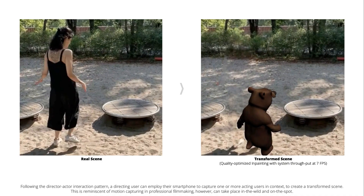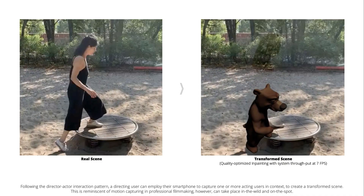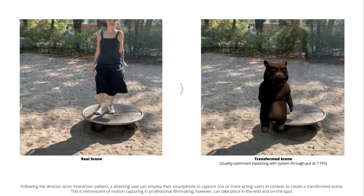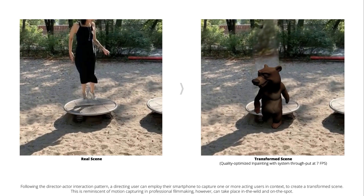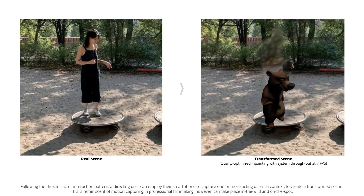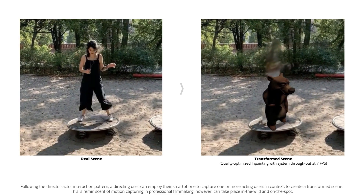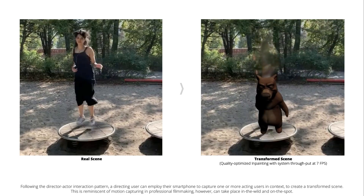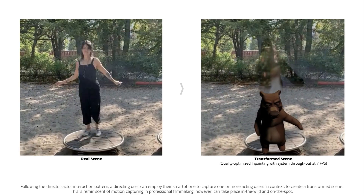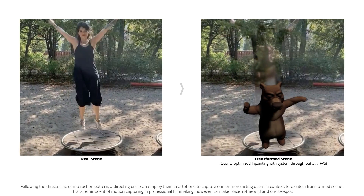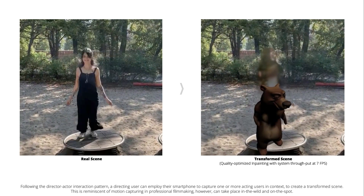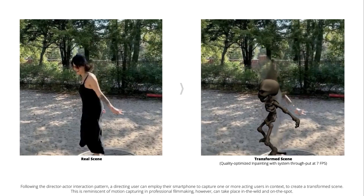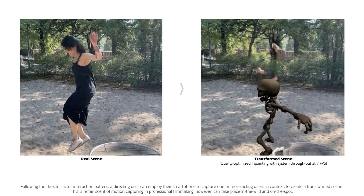Following the director-actor interaction pattern, a directing user can employ their smartphone to capture one or more acting users in context to create a transformed scene. This is reminiscent of motion capturing in professional filmmaking, however, can take place in the wild and on the spot.